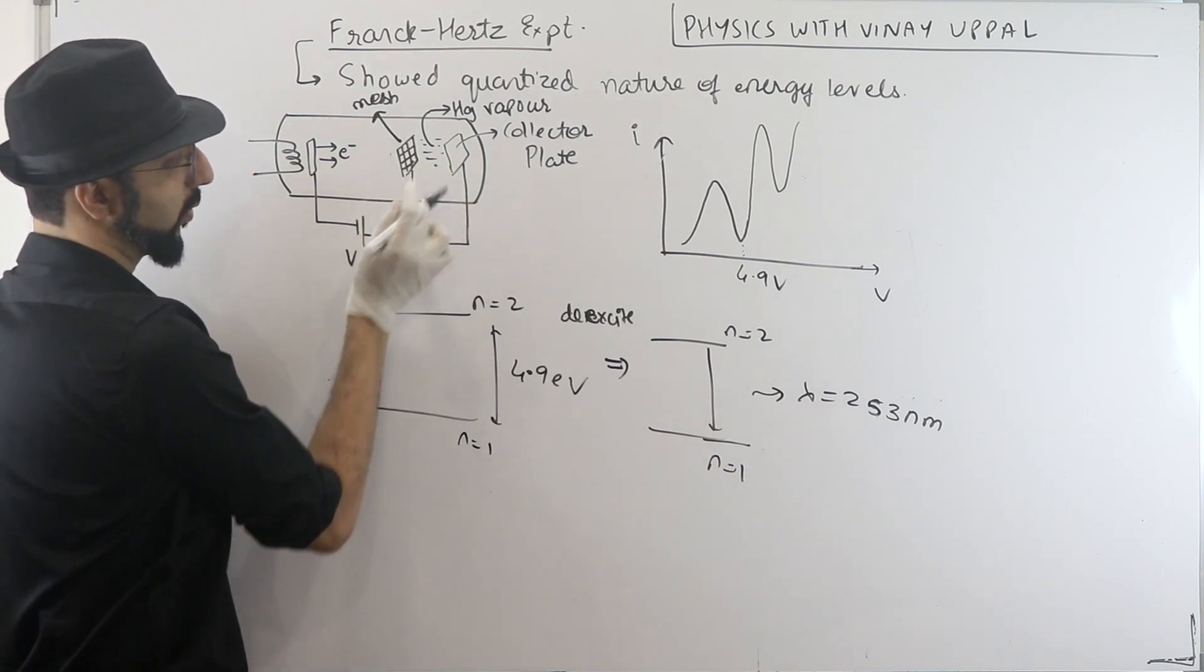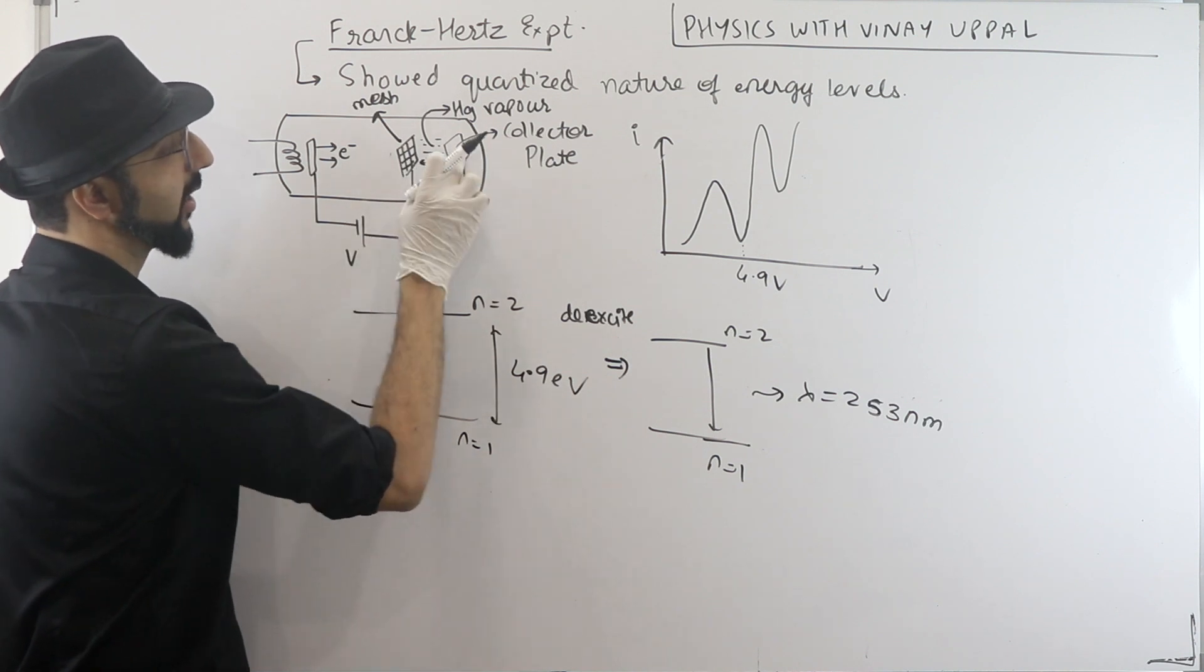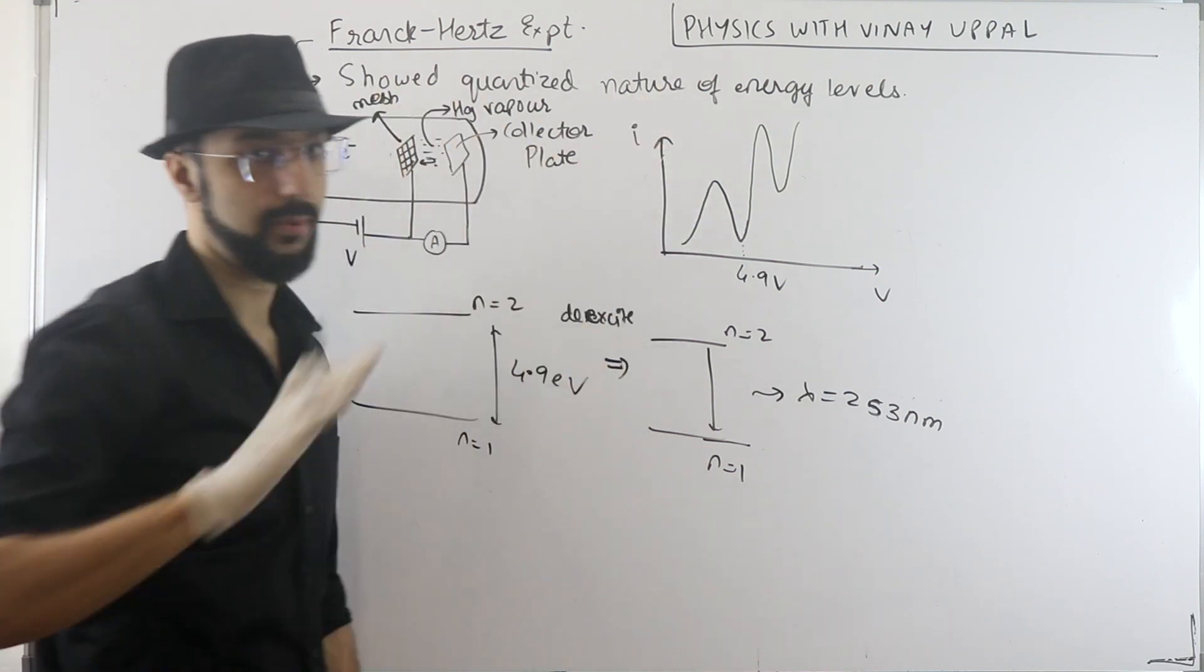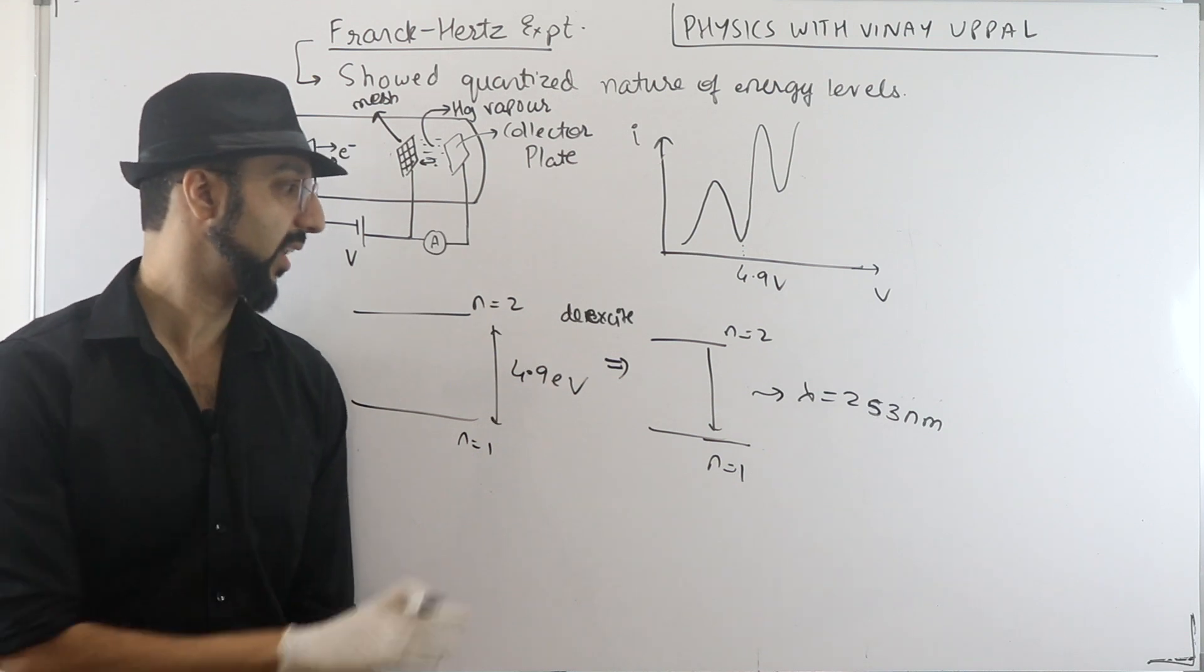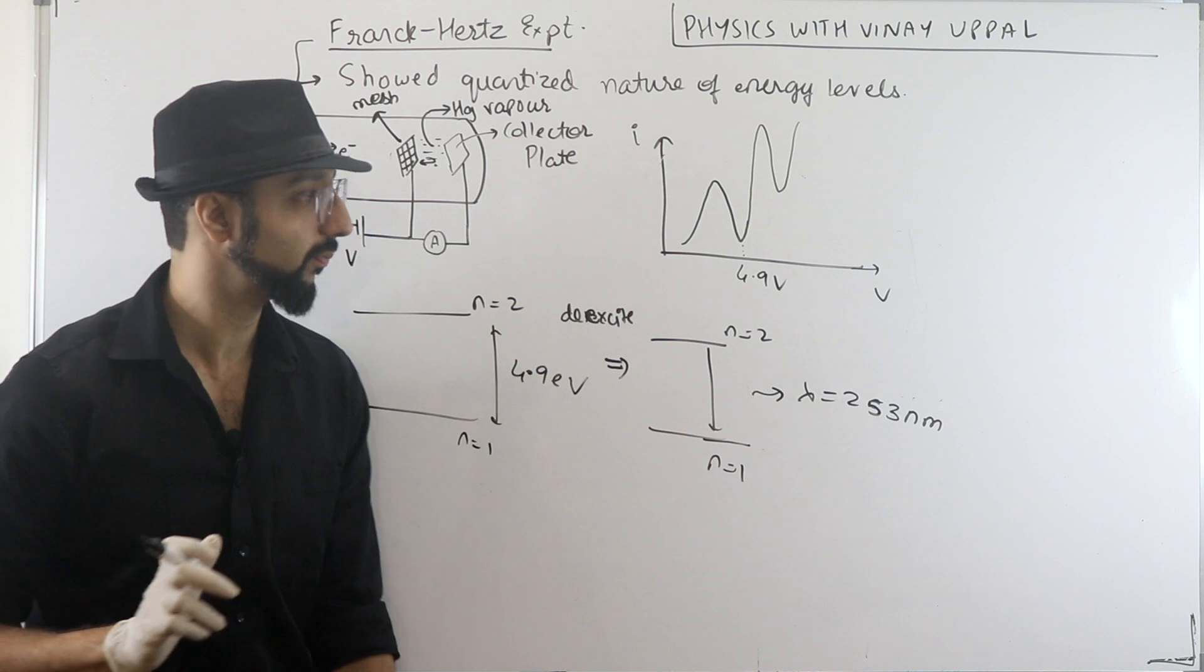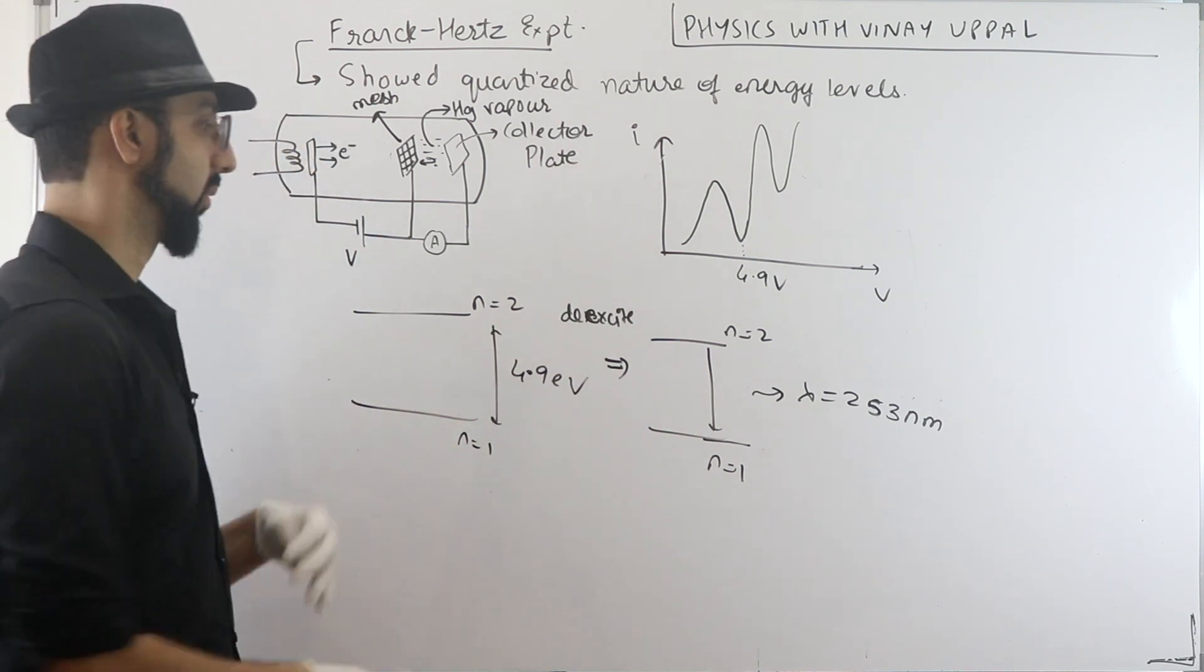So they were again attracted back to the mesh because of this mesh positive voltage. They never reached the collector plate, so current was never formed and current suddenly dropped. Okay, so that is how they said that energy levels must be quantized because they should have discrete values.